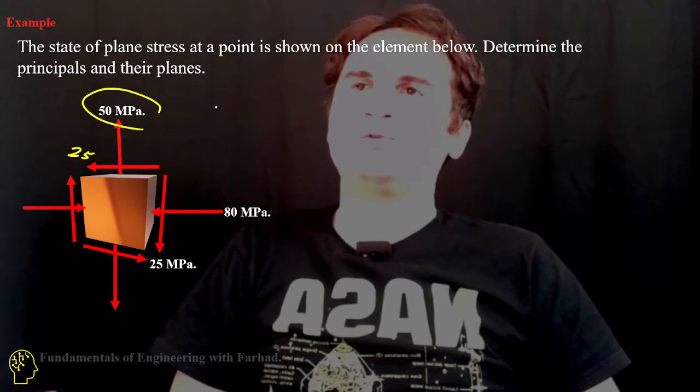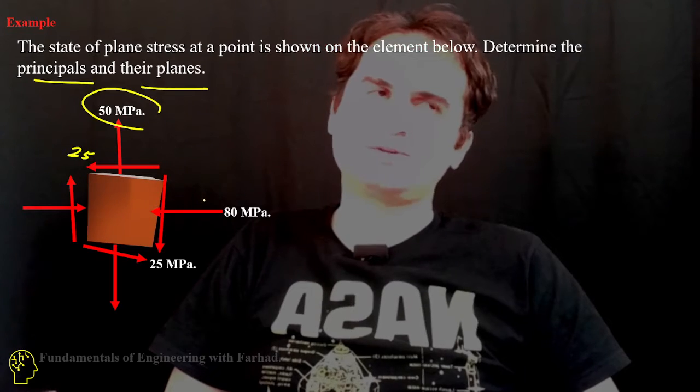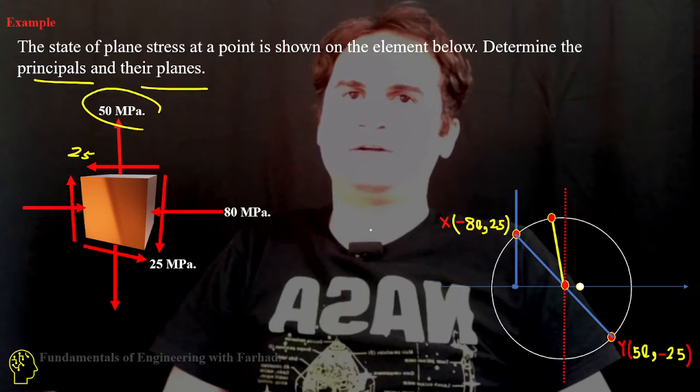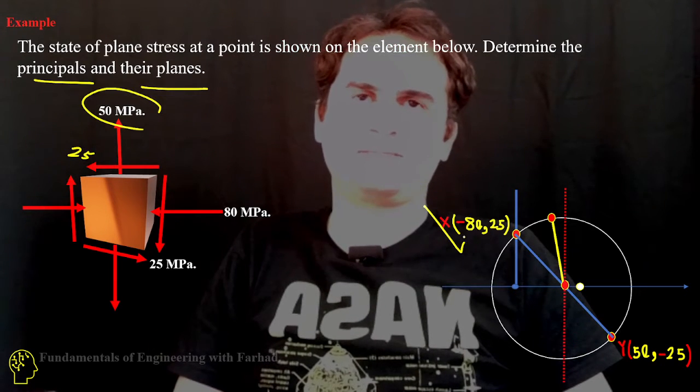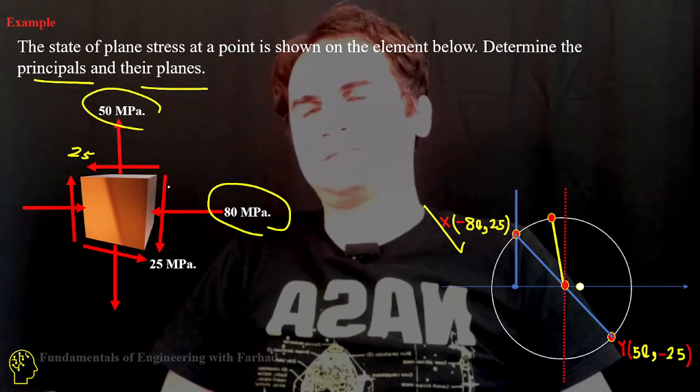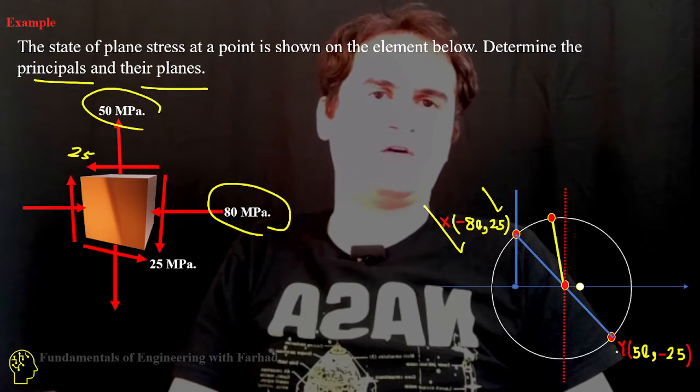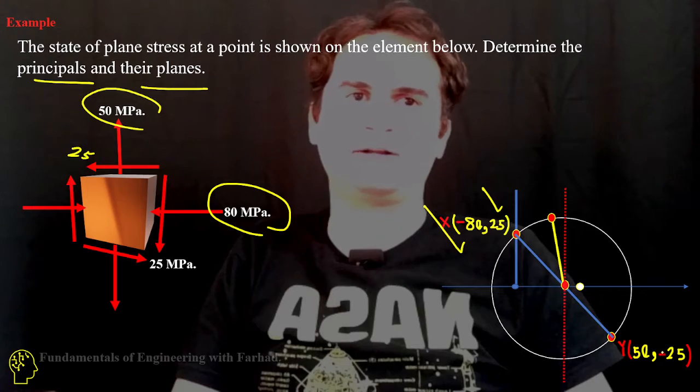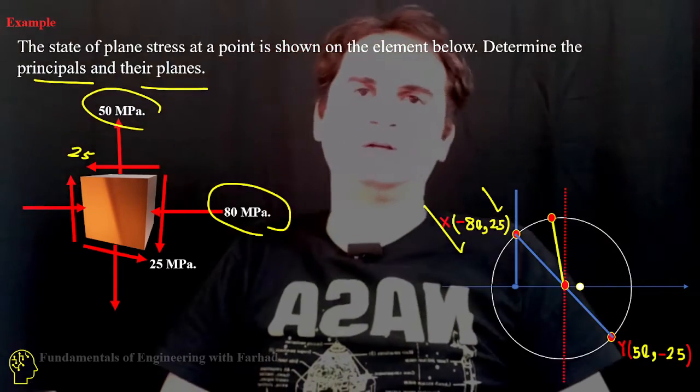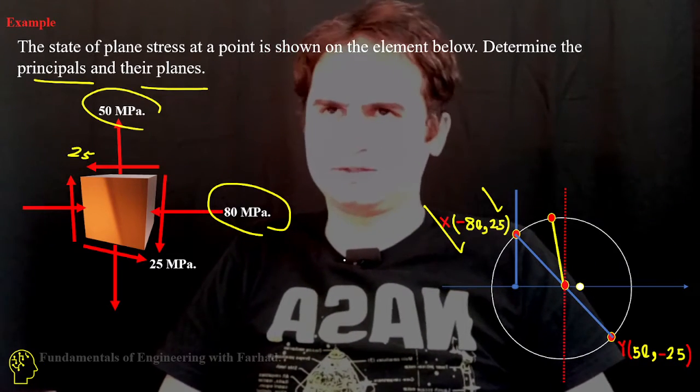We want to know what are the principal stresses and their planes. So for doing so, if you remember from Mohr circle, we drew last time for x equals 80, a push, and 25 like here. And like the y-point, 50 like a pull and negative 25, because that's counterclockwise, goes below the x-axis in the sigma and tau stress shear diagram.